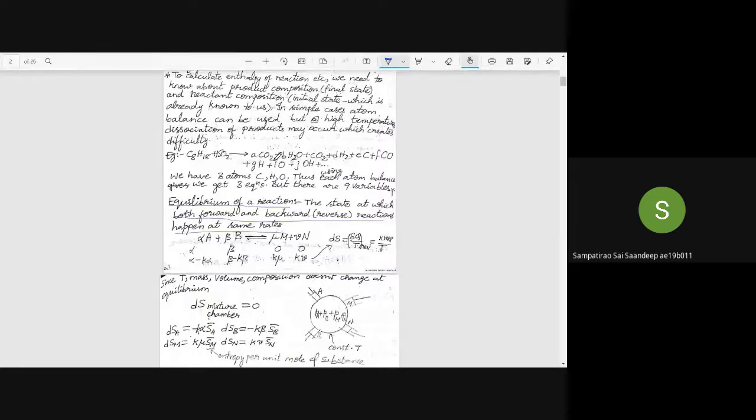After defining the equilibrium constant, how is this related to the enthalpy change? Basically, we can get three equations from atom balance. The remaining six equations we can get from dissociation reactions.